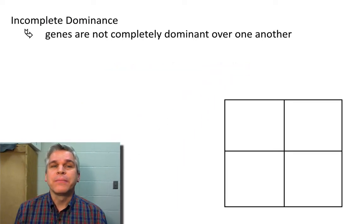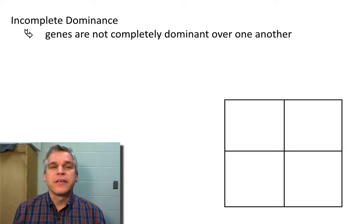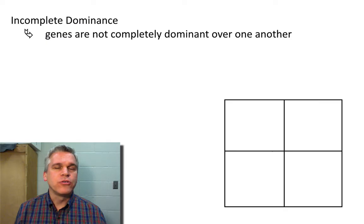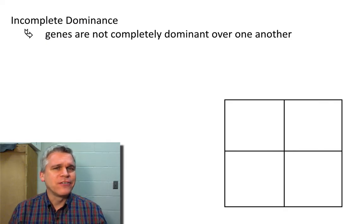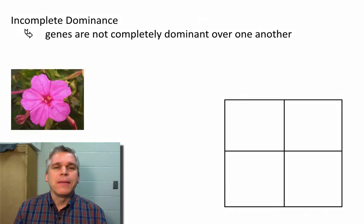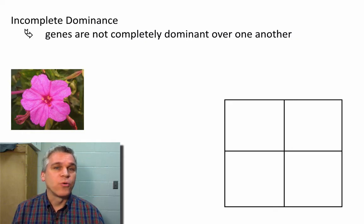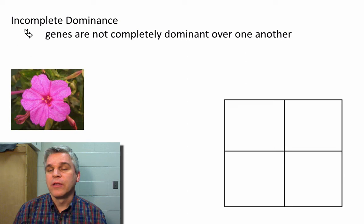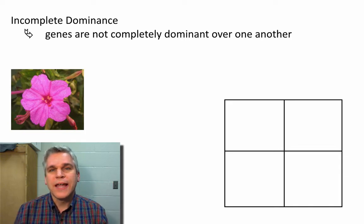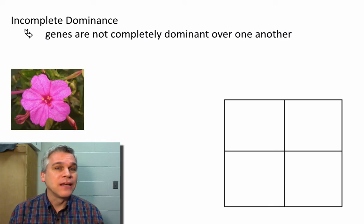The first one is called incomplete dominance. In incomplete dominance, genes are not completely dominant over one another. We don't have a dominant and recessive relationship — we have two genes that are not really dominant and not really recessive either. When we get them combined, we get a blending of the two. For example, there's a flower called a Japanese four o'clock flower that has a red allele and a white allele. When the red and the white alleles get together, you get a pink flower. So the red's not being fully expressed and the white's not being fully expressed — there's a blending of the two together.